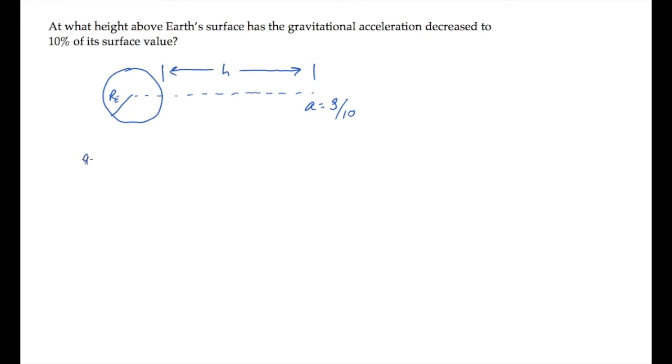So we know that the ratio of the surface value to the value at our height h equals 10. The surface acceleration, little g, equals capital G times Earth's mass divided by Earth's radius squared.